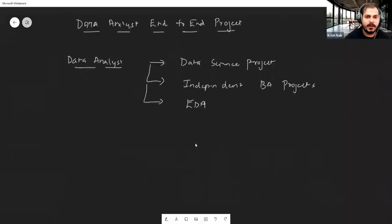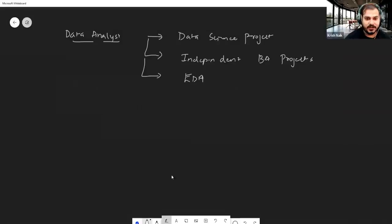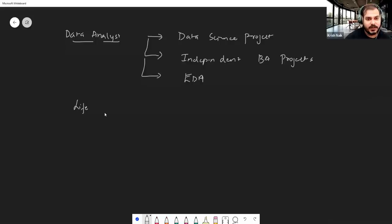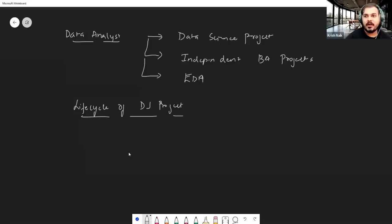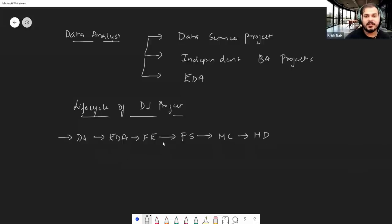Many people are confused about how the data analyst project is used in a data science project. Let's discuss the life cycle of a data science project, which includes: data gathering, EDA (exploratory data analysis), feature engineering, feature selection, model creation, and model deployment.